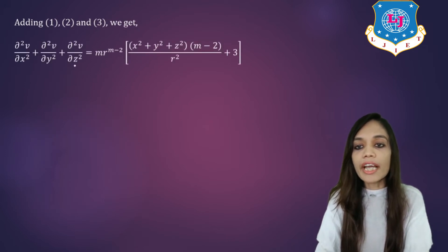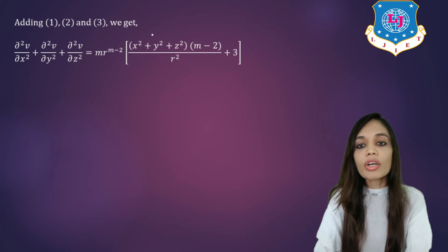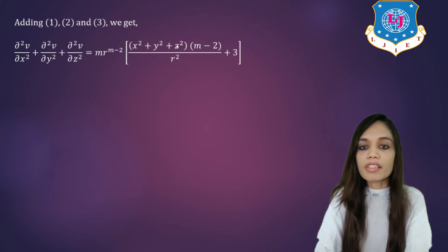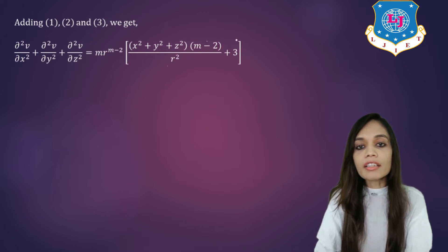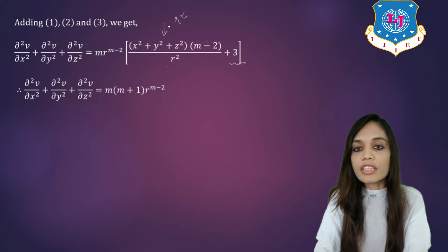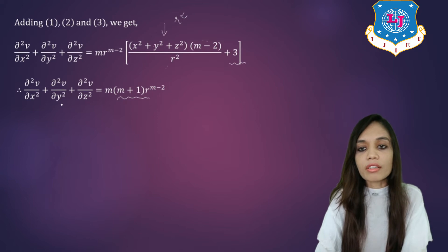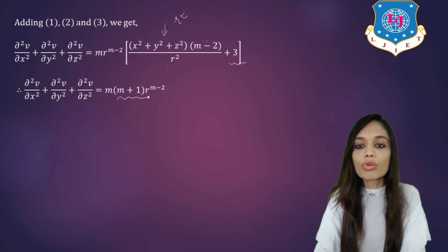On adding, del square v upon del x square plus del square v upon del y square plus del square v upon del z square equals m into r raise to m minus 2 into x square plus y square plus z square into m minus 2 upon r square plus 3. Since x square plus y square plus z square equals r square, the r square terms cancel, leaving m minus 2 plus 3 which equals m plus 1. So the final answer is m into m plus 1 into r raise to m minus 2, which is our desired result.